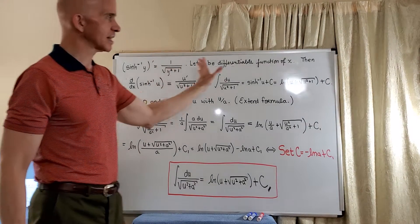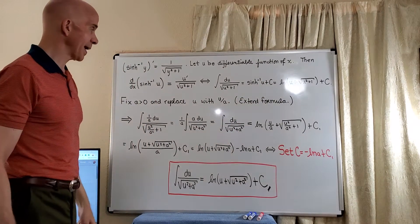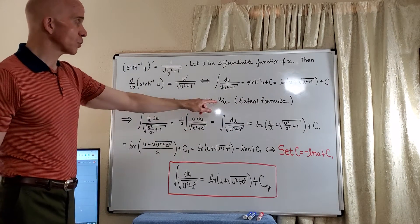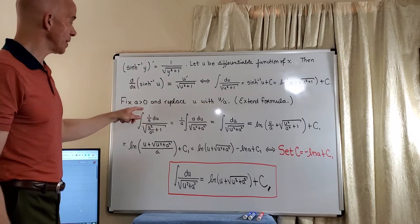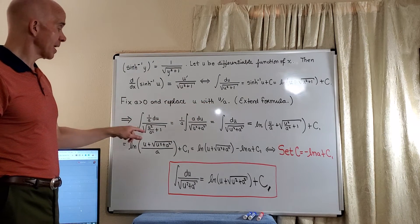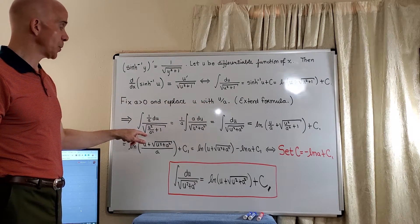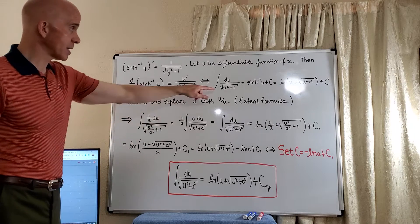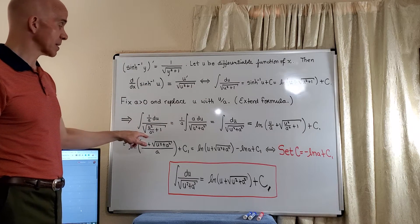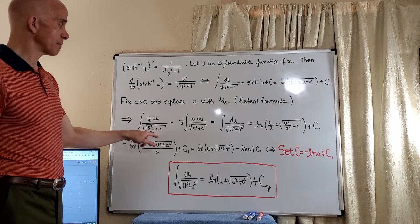So we're just going to take this formula and replace u with u divided by a. So now the differential, instead of du, will be 1 over a du. And then of course we'll replace u downstairs here with u over a, giving us u squared over a squared plus 1.